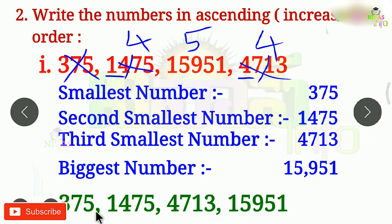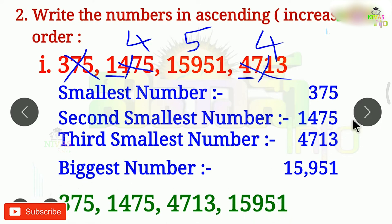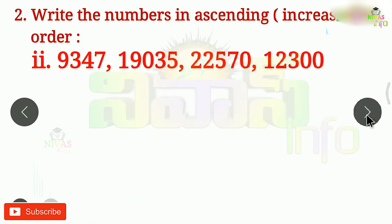So the ascending order is: 375, 1475, 4713, and 15951. This is the ascending order. Our numbers after arranging are changed to this second order. We have some numbers.